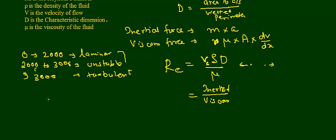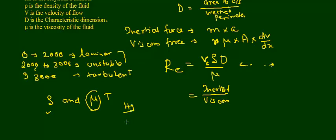What is the relationship between density and viscosity? We might think that if density increases, viscosity will increase because molecules will be more tightly packed. However, that is not necessarily the case. Viscosity depends more on temperature — in liquids, as temperature increases, viscosity decreases. For example, mercury has very high density but its viscosity is very low.